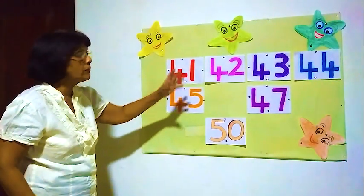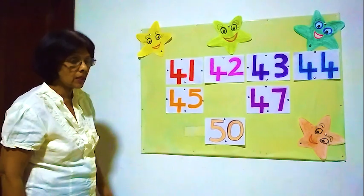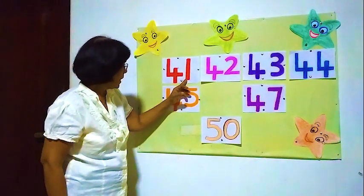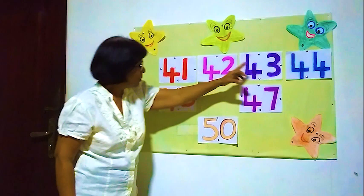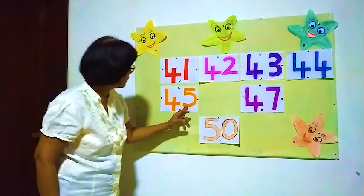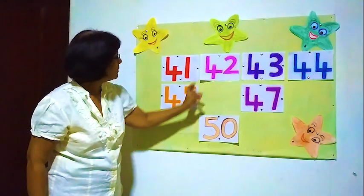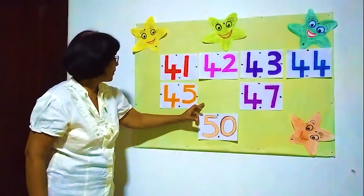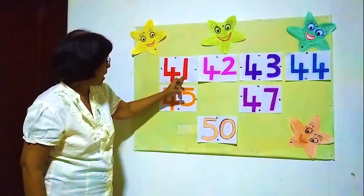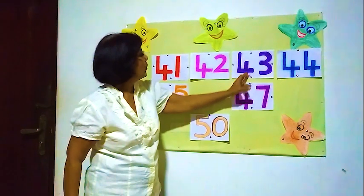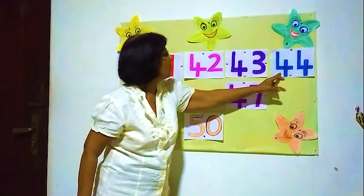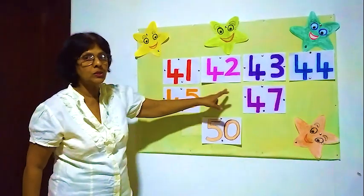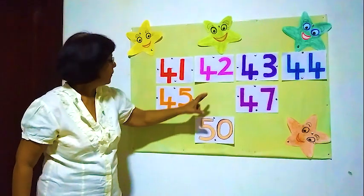After 45, what is the number? Let's count: 1, 2, 3, 4, 5 — after 5 is 6. So the front number stays 4, and 4 then 6 gives us 46.